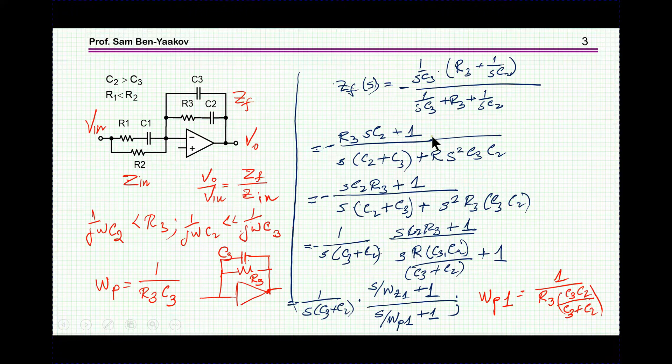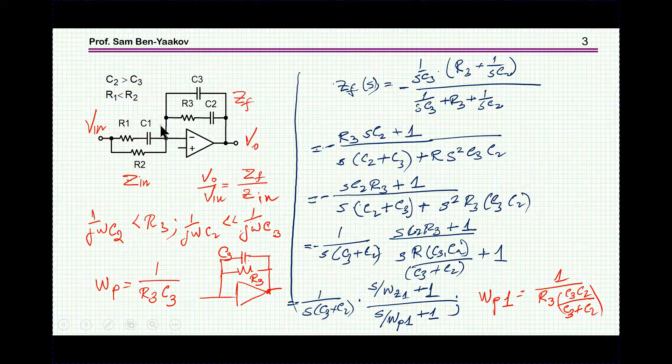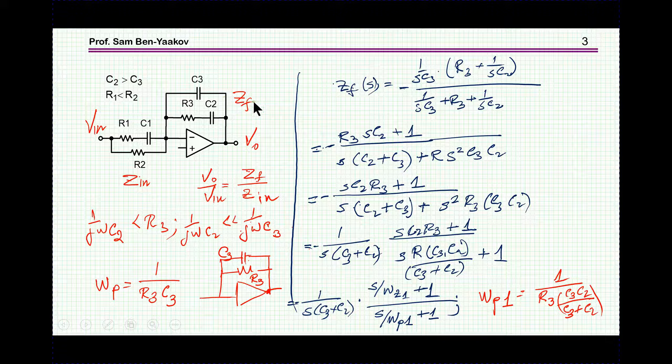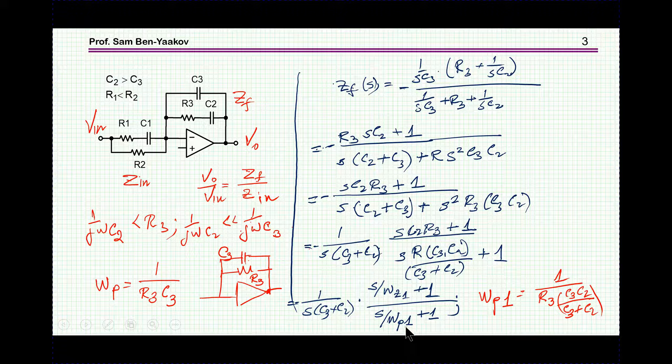However, if I do an analysis of this circuit, looking at it as an inverting amplifier, ZF over Zin, then I find, just by taking these two in parallel, I find that I have a pole at zero frequency, which is fine, it's like an integrator, and then I have a zero, and then I have another pole, which I'm interested in.